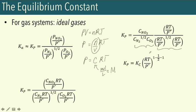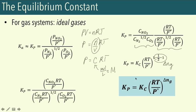Just be very careful about the units used for the RT over the standard pressure expression when converting between KP and KC. For solution systems where we have solutes as our components — for example, the dissociation of acetic acid in water to form hydronium ions and acetate ions — we write the general KA expression in terms of activities: KA equals the activity of hydronium times the activity of acetate over the activity of acetic acid times the activity of water.